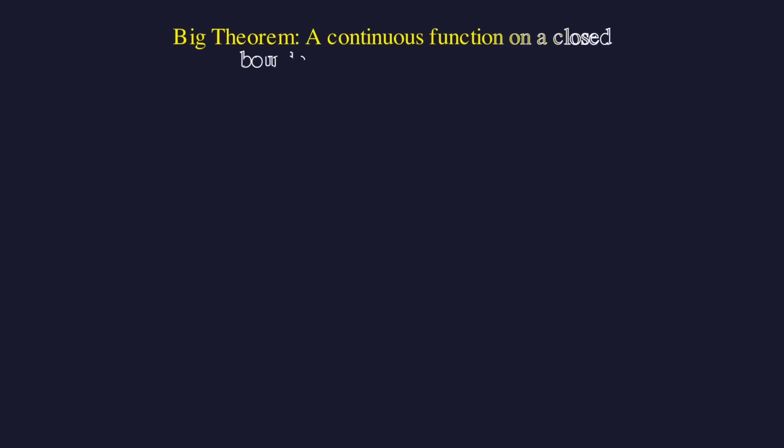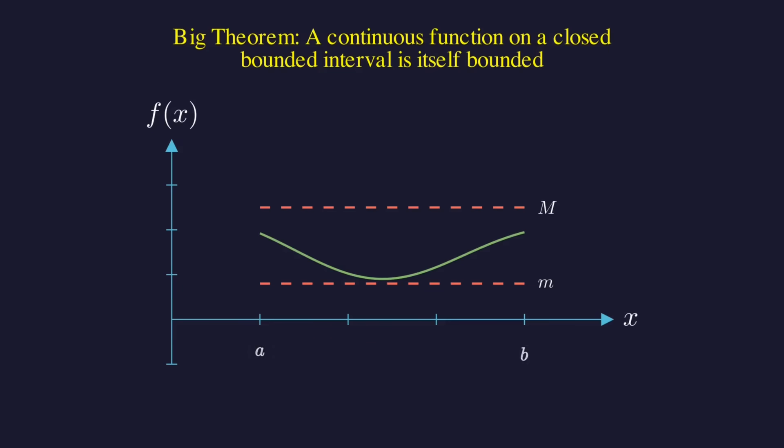Now let's put real induction to use and prove a classic result from real analysis. We will prove that the output of a continuous function on a closed bounded interval is bounded. Notice that we really need both the closed and bounded condition. If the interval isn't closed, then just consider the function 1 over X defined on the open interval from 0 to 1.